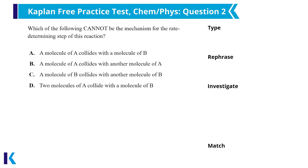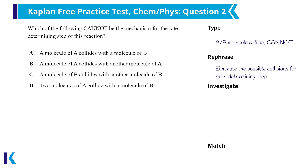Glancing through question two, two things immediately stand out: the answer choices all talk about collisions between A and B, and the big 'cannot' in the question stem. I rephrase these EXCEPT-style questions to eliminate what does work, rather than targeting the answer that doesn't fulfill the question. For this question, I'll rephrase it to eliminate the possible collisions for the rate-determining step. I remember from my passage analysis that there is a reaction with A and B, so this is passage-based, and before any in-depth analysis, I'll apply some content knowledge.